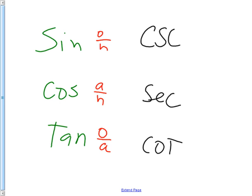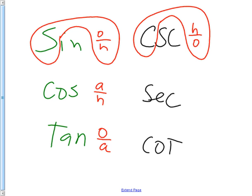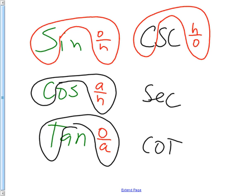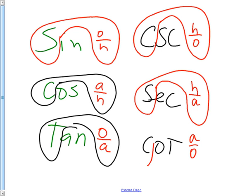Instead of opposite over hypotenuse, it becomes hypotenuse over opposite. Where this was SOH, it becomes HO. SOHCAHTOA becomes CHO-SHA-CAO.